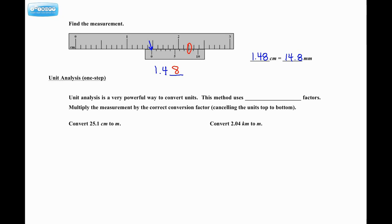Moving on to unit analysis, one step. Unit analysis is a very powerful way to convert units. It's a method that uses what we call conversion factors. You'll see what those are in just a second. What you do is you take the measurement that you want to convert, and you multiply it by the correct conversion factor. And in the process, you get to cancel the units that you don't want from top to bottom. Well, what does all this stuff even mean? I'm just going to demo it for you. So let's suppose we want to convert 25.1 centimeters to meters. Now this is a very simple conversion. You don't need unit analysis for something like this. However, I still want to demonstrate to you how the process works.